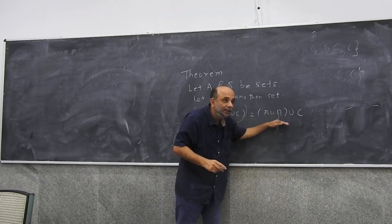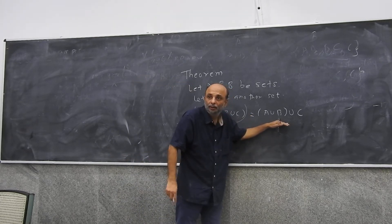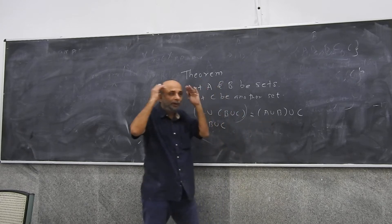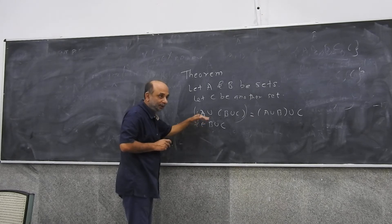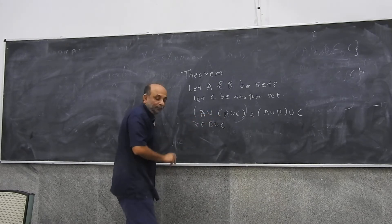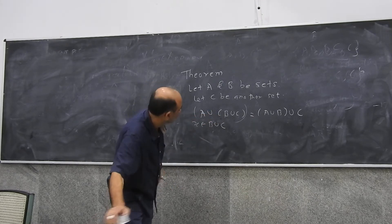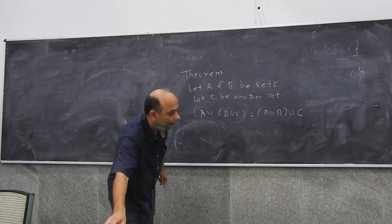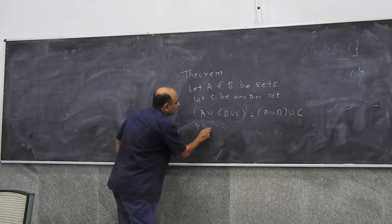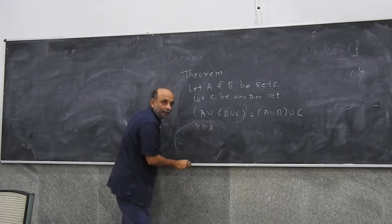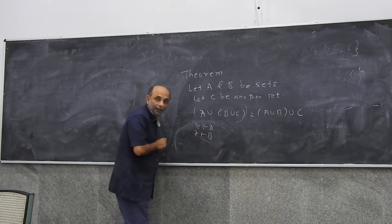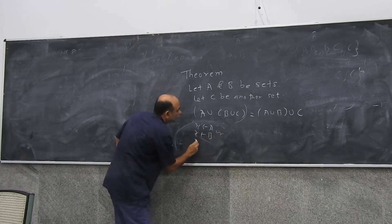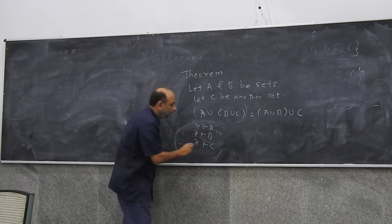Now, are these elements any different? Think of any element which belongs to this set. Think of any element which belongs to this set — in this direction. Then it means that this element belongs to either A or B or C.